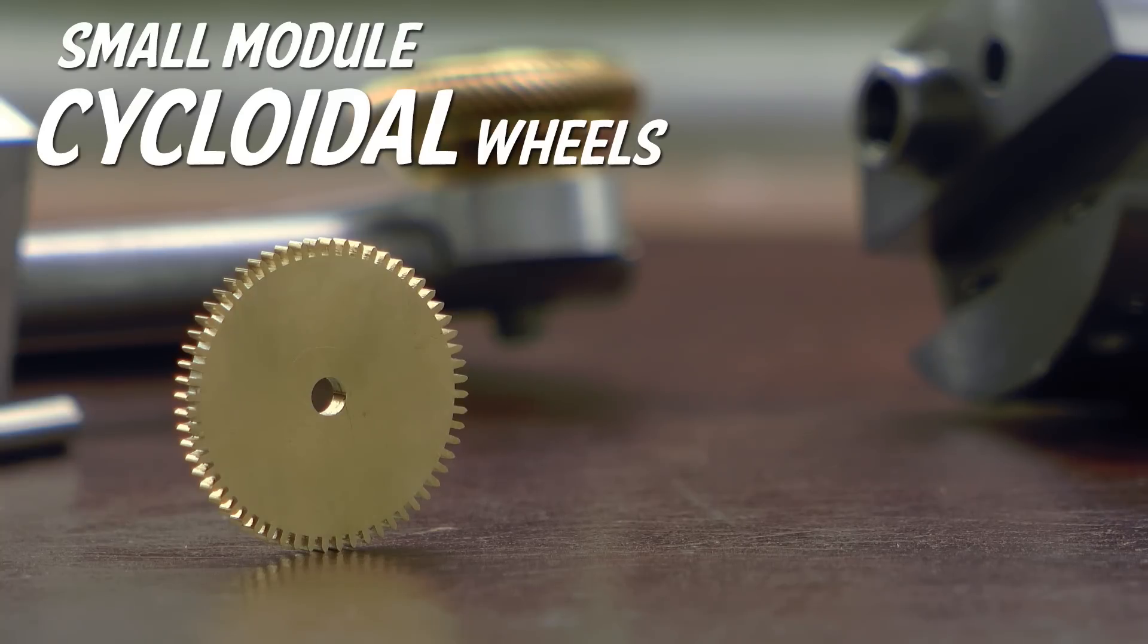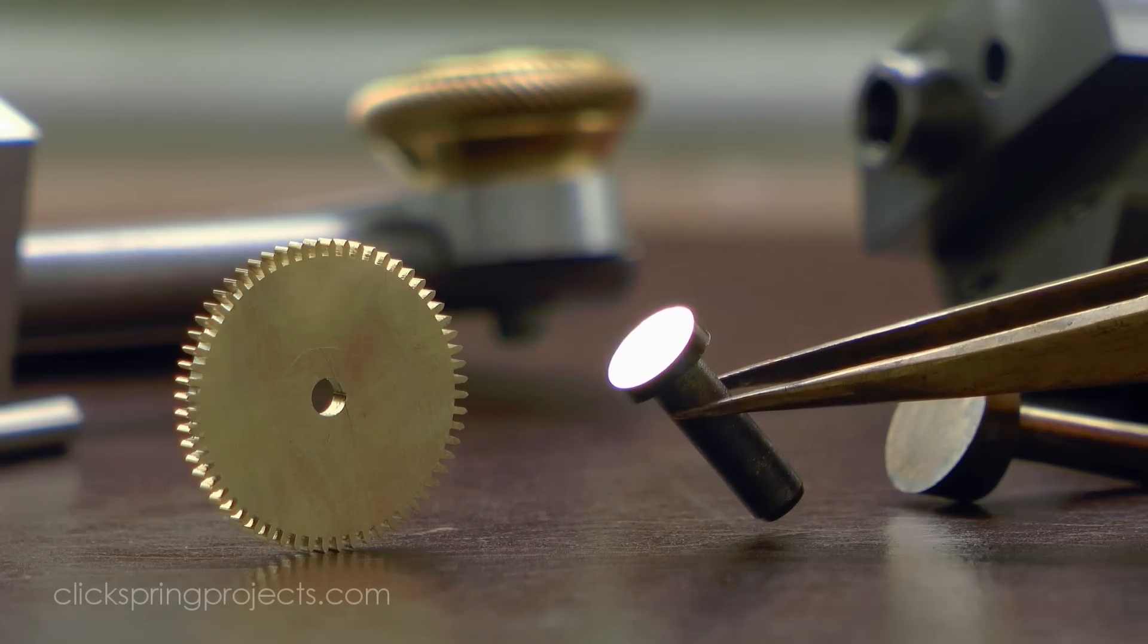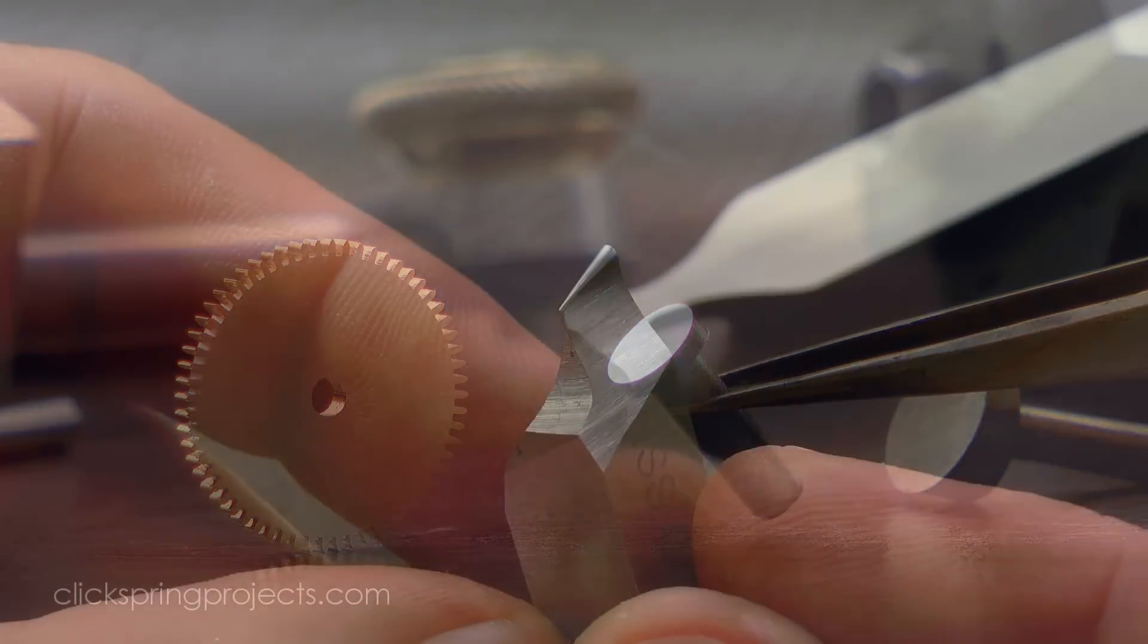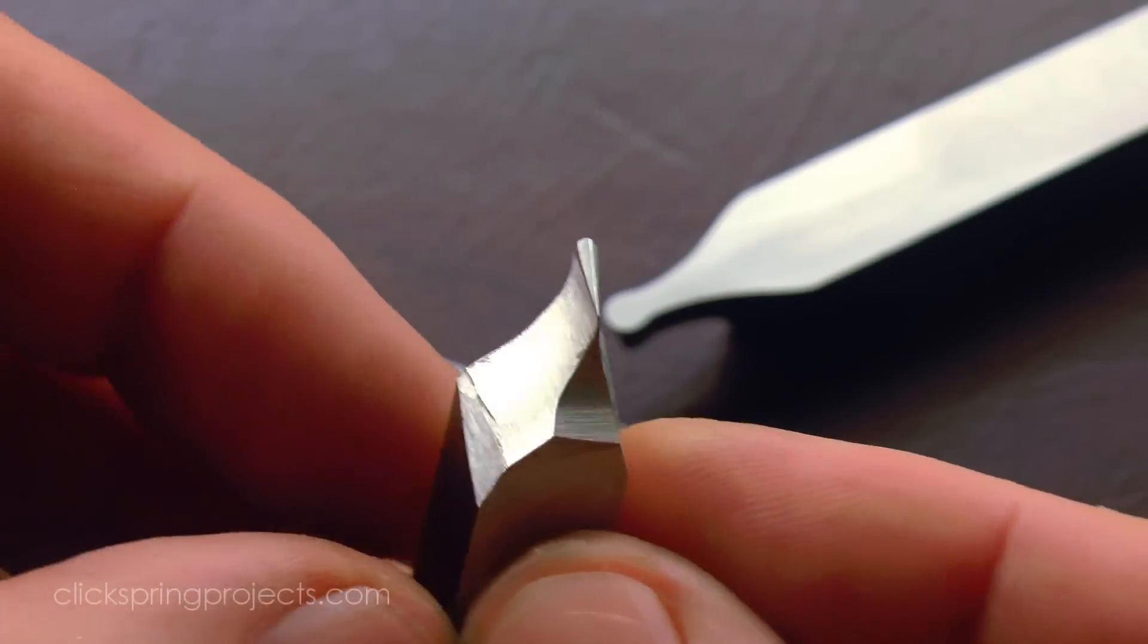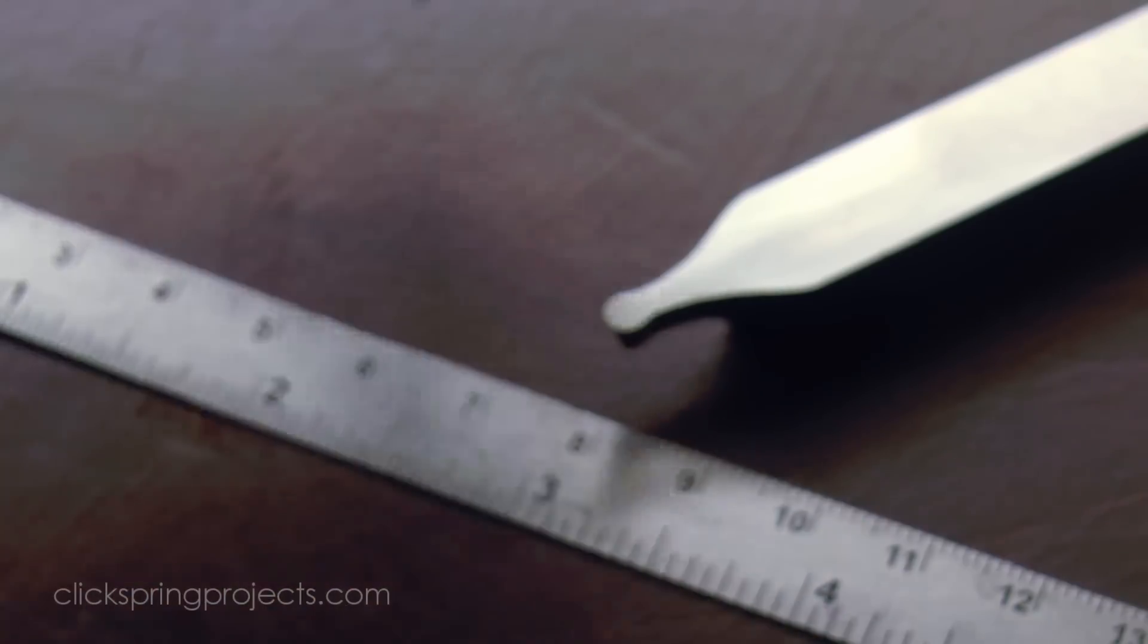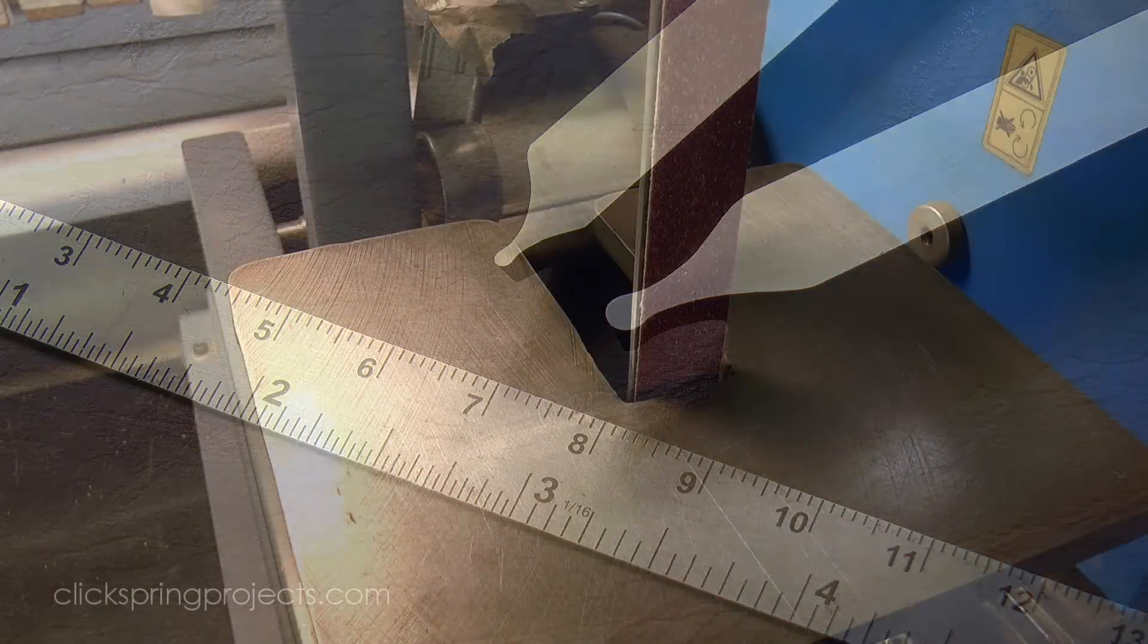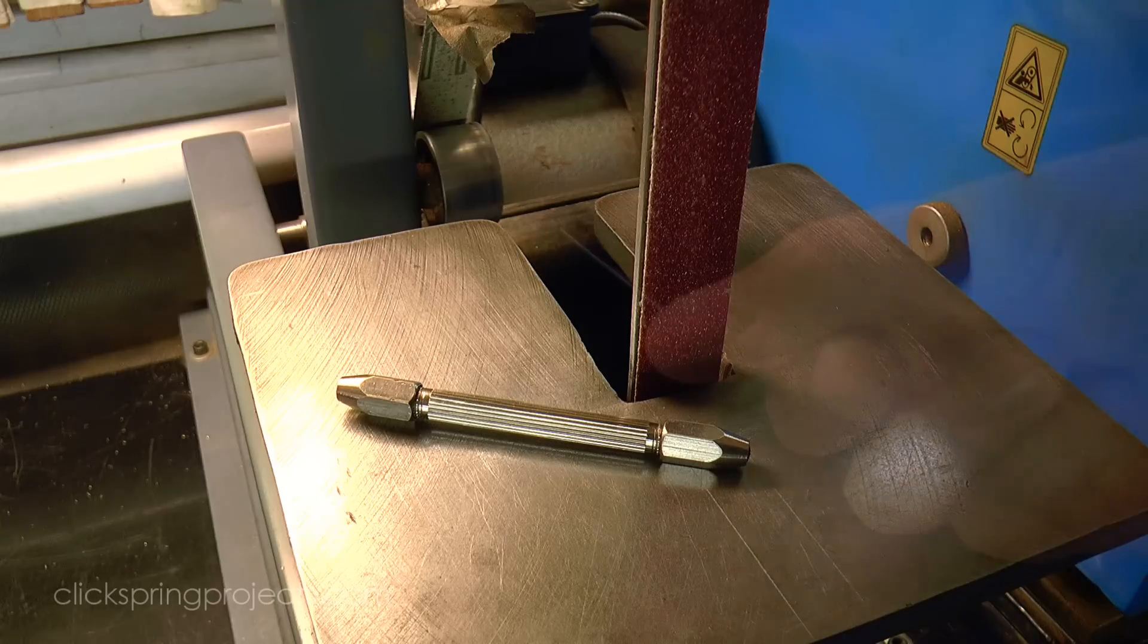For example, small module cycloidal wheels call for a button cutter geometry that becomes increasingly impractical the smaller we go. Certainly the process of hand grinding high speed steel covered in the previous video is a good alternative to consider. But if we're going to reliably create small module cutters, then we really need an option that's both dimensionally sound and a bit more convenient.